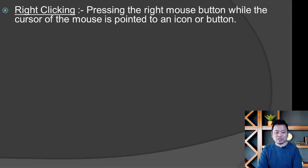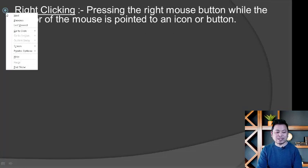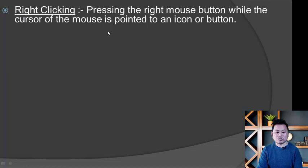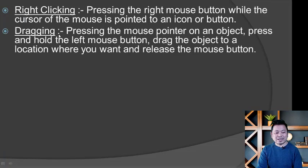Right-clicking means pressing the right mouse button while the cursor is pointed at an icon or button. A specific option menu appears when you right-click. For dragging, press and hold the left mouse button, drag the object to the desired location, and then release the mouse button.